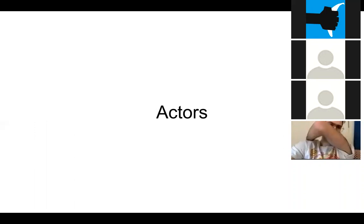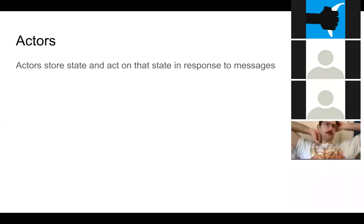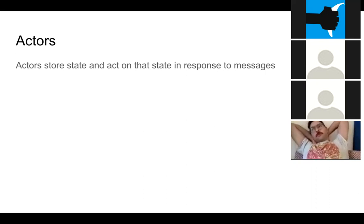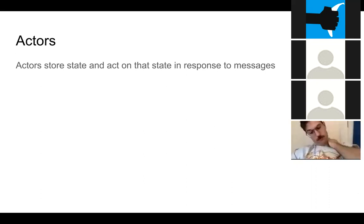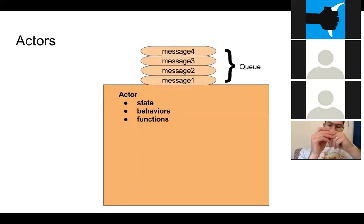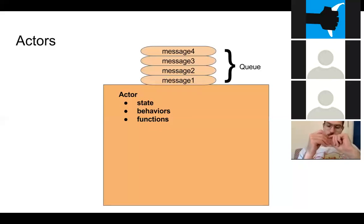Let's talk a little more about what actors are. Actors store state and act on that state in response to messages. Actors have some values they hold, and they receive messages, then do things to those values. Graphically, there's a queue of messages, the actor holds state, actors have behaviors that respond to different types of messages, and they have functions which they can call to do their work.